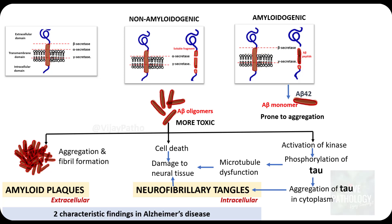Let us quickly recollect the pathogenesis of Alzheimer's disease. If you want a detailed understanding, go through part 1 — the link will be in the description box below. We had talked about the two pathways of amyloid beta protein: the non-amyloidogenic and the amyloidogenic pathway. In the amyloidogenic pathway, A-beta-42 is generated, which is prone to aggregation and is more toxic when it becomes oligomers. These oligomers finally aggregate to form amyloid plaques.